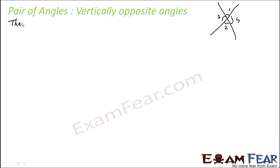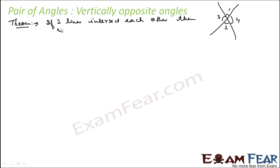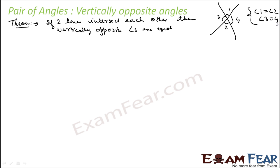There is a theorem: if two lines intersect each other, then vertically opposite angles are equal. So angle 1 will be equal to angle 2, and angle 3 will be equal to angle 4. Please note this is a theorem, not an axiom — that means we have to prove it.